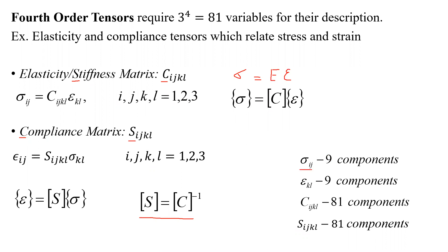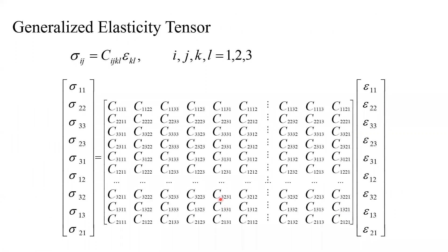Our stresses are second order tensors with nine components; our strains are second order tensors with nine components; the elasticity and compliance tensors are fourth order tensors with 81 components. For writing a fourth order tensor in matrix form — matrices are naturally suited for second order tensors, where the first index corresponds to the row and the second to the column. Since we cannot directly write a fourth order tensor as a matrix, we change the stresses and strains into column matrices, allowing us to write the relationship in matrix form.